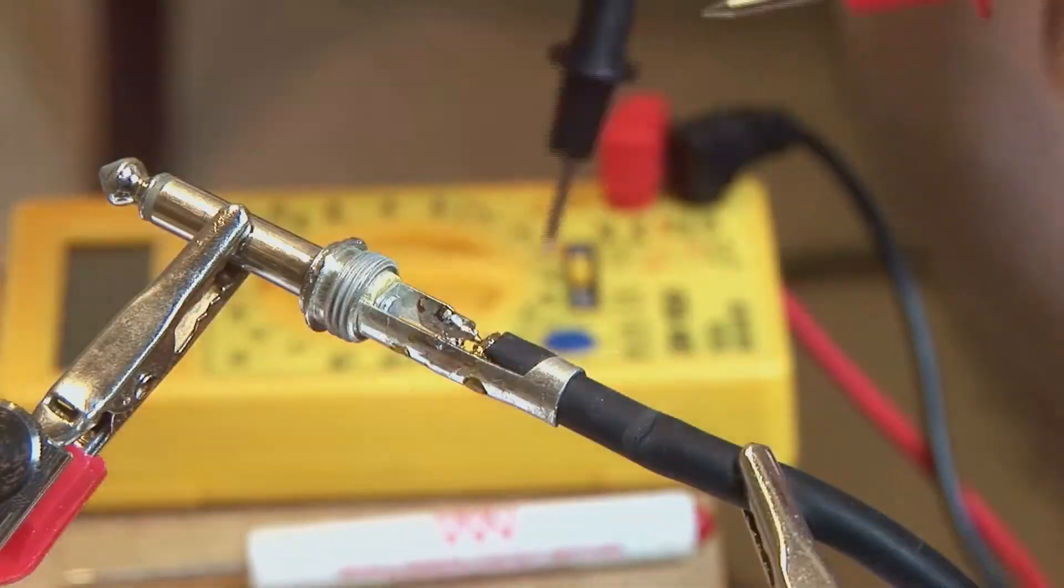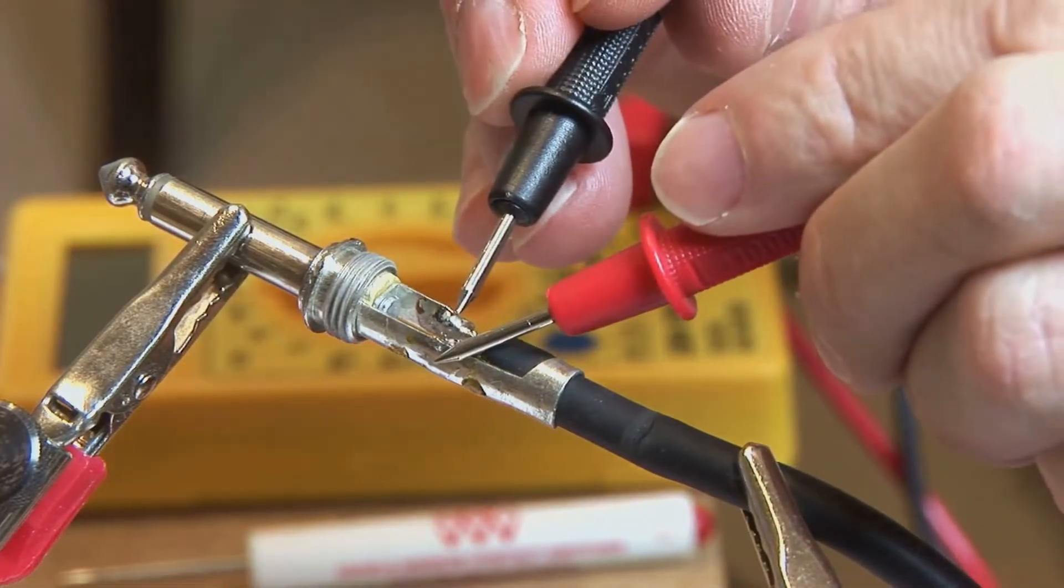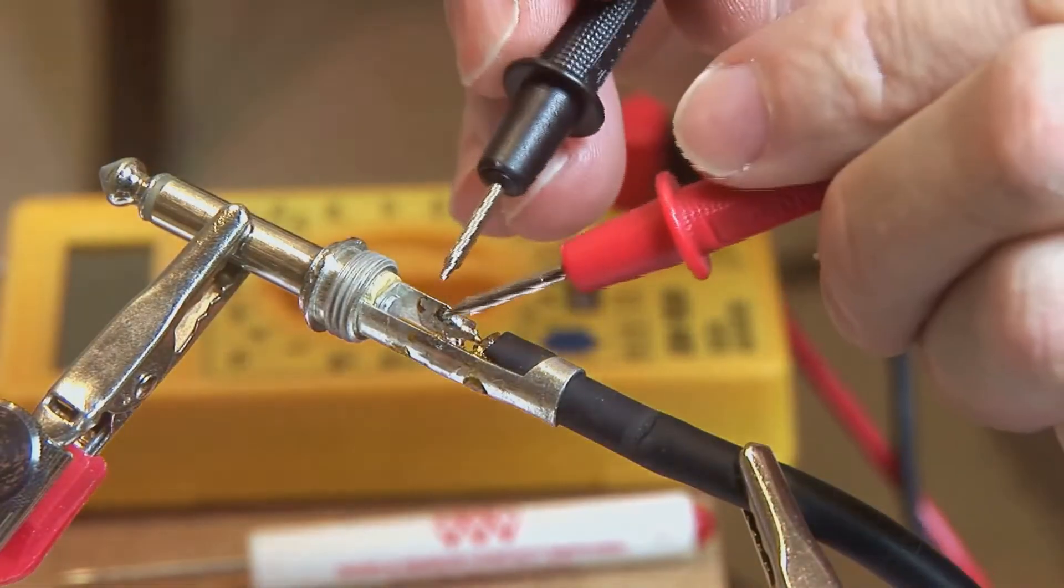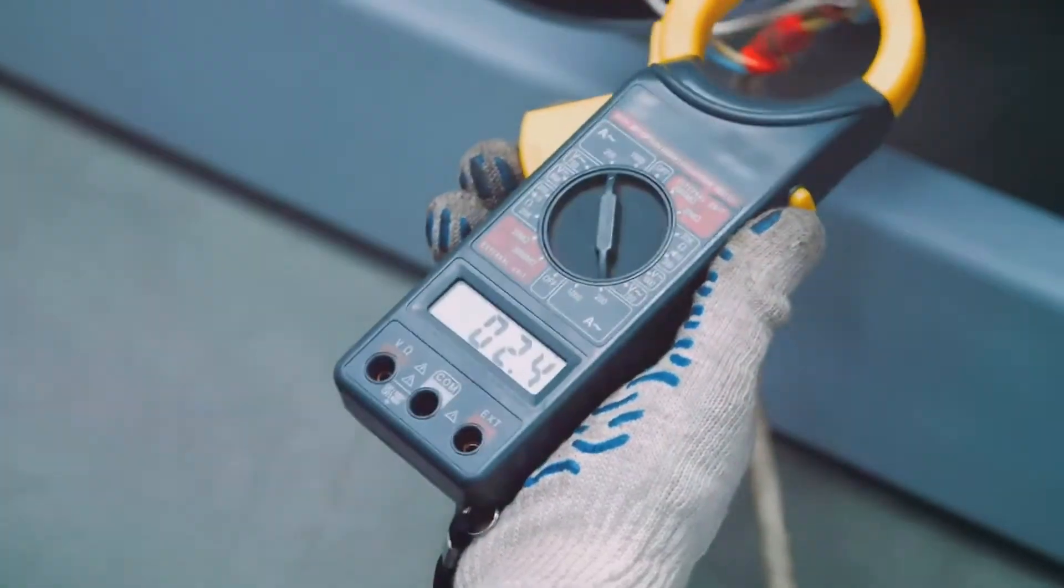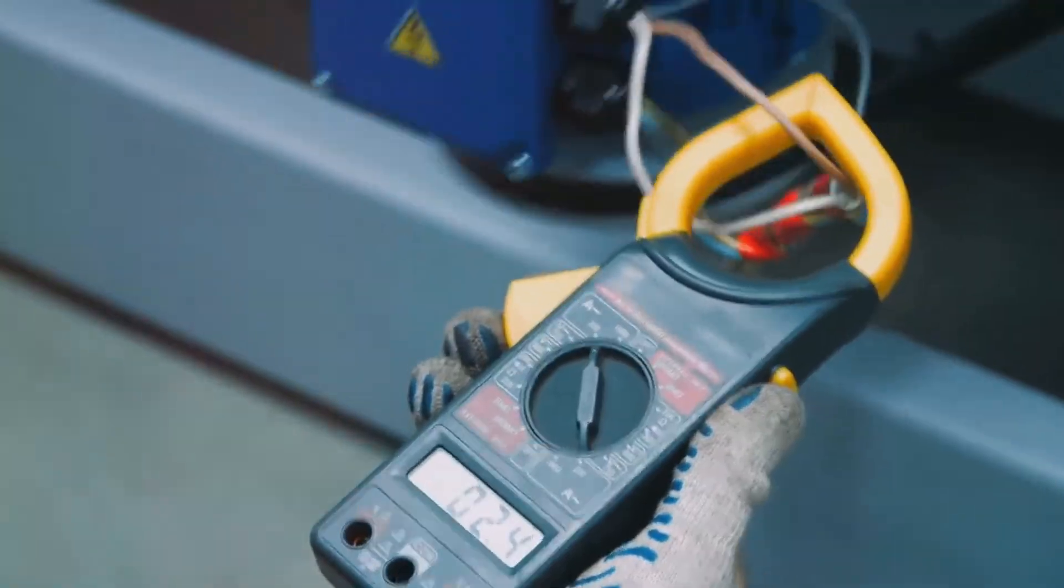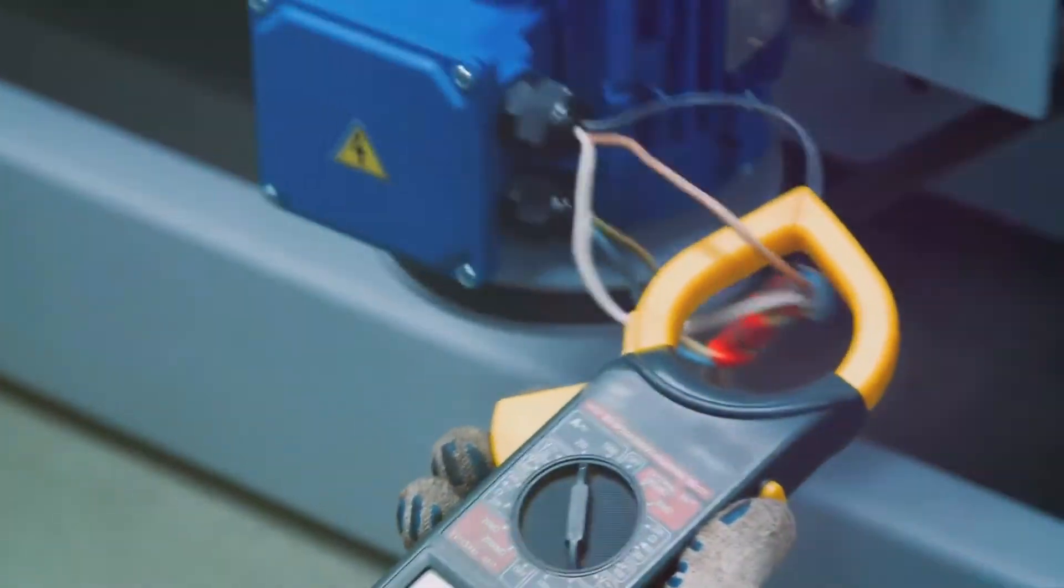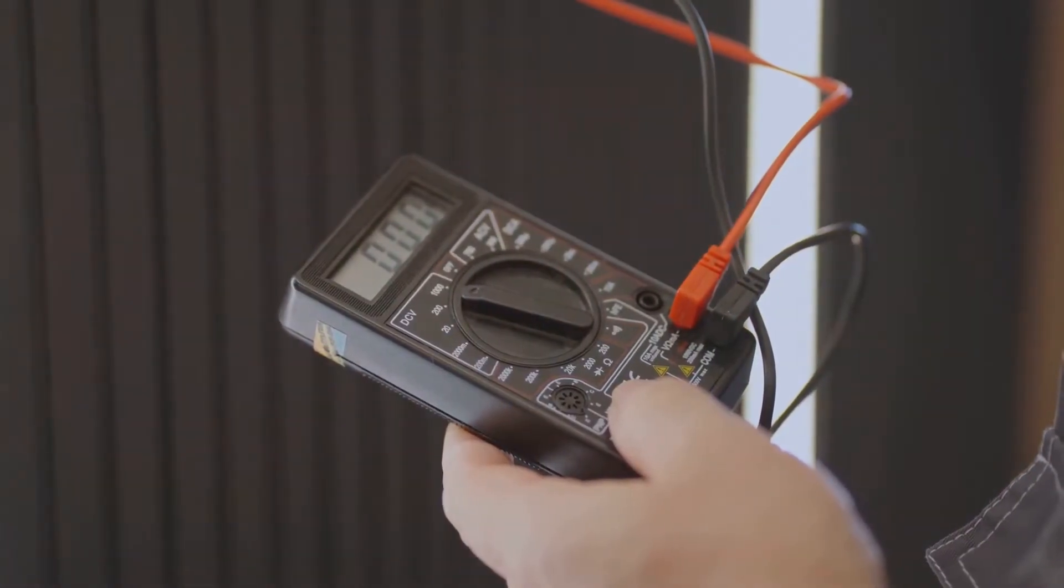Next, touch one probe to each terminal - it doesn't matter which probe goes on which terminal. Now read the display on your multimeter. This number is the solenoid's resistance measured in ohms. Write down this reading - it's important for figuring out if your solenoid is healthy.